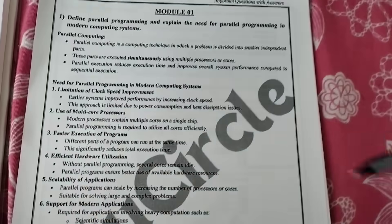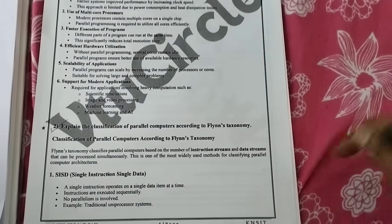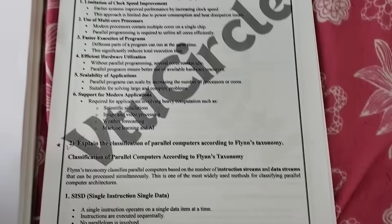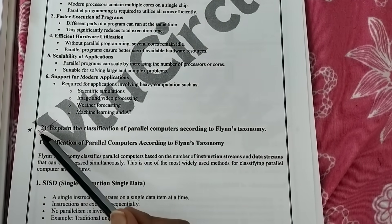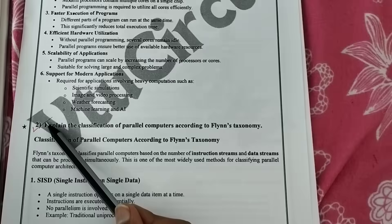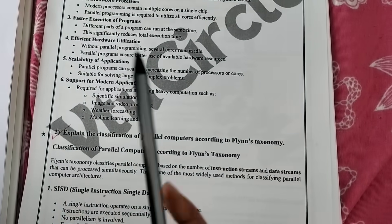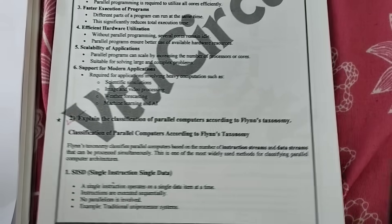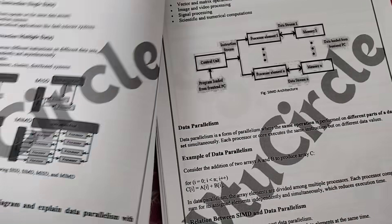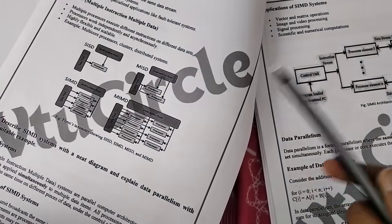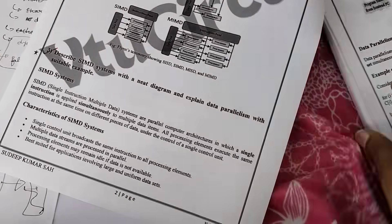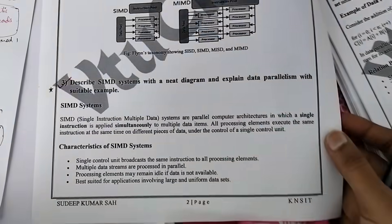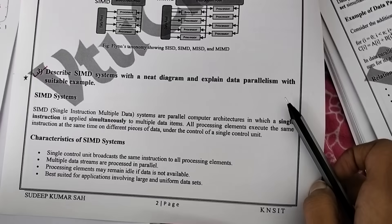Five questions in each module. For the first module, all the questions I have marked in red pen — those are the ones we are going to study. This is the first question. The solution PDF is already given in the drive. This is the second question.